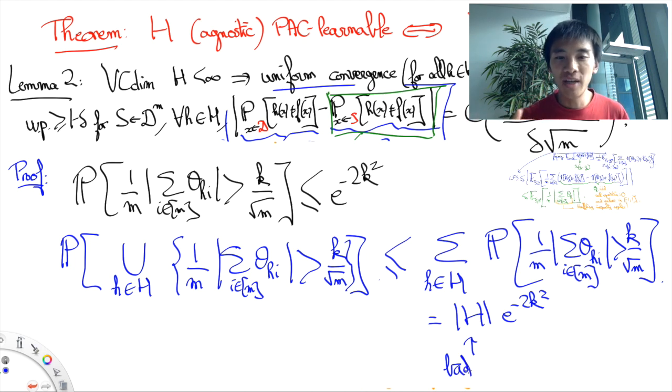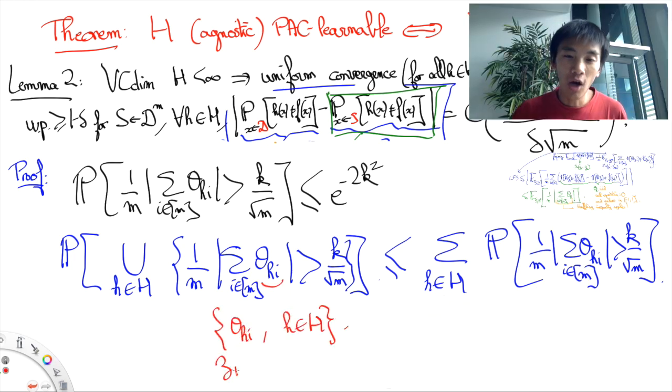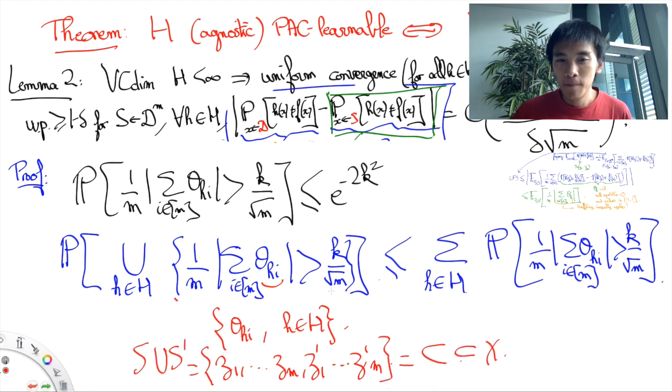However, here's the big major trick of this proof, and it's a very common trick in machine learning theory. The big trick is that there are many hypotheses H that correspond to the actual same event that we want to bound. So, in fact, the union bound that we are thinking of can be reduced to the number of different effects of the choice of a hypothesis H to the values here theta HI.